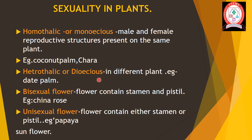In angiosperms, the flower is the reproductive part of the plant. In angiosperms like mustard, China rose, and pea, the flower contains both stamen and pistil — meaning male and female reproductive structures are in the same flower. Such flowers are called bisexual flowers.